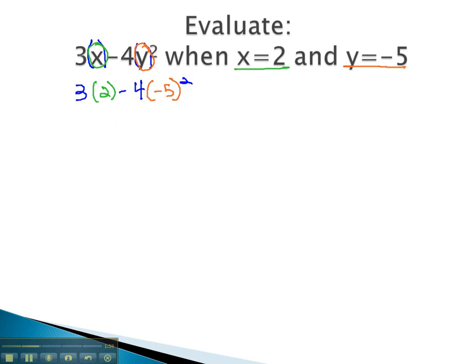Order of operations is going to ask us to evaluate the exponent first. So we have 3 times 2 minus 4 times, negative 5 squared is positive 25. Next, we multiply from left to right. 3 times 2 is 6, minus 4 times 25.